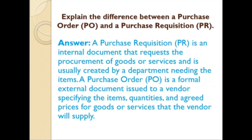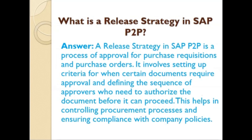Explain the difference between a purchase order and a purchase requisition. A purchase requisition is an internal document that requests the procurement of goods or services, usually created by a department needing the items. A purchase order is a formal external document issued to a vendor specifying the items, quantities, and agreed price for goods or services that the vendor will supply.